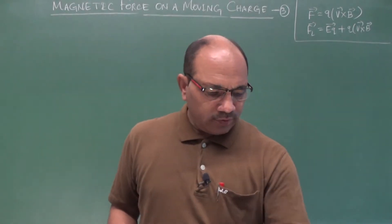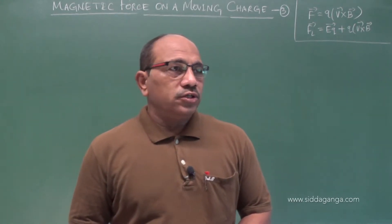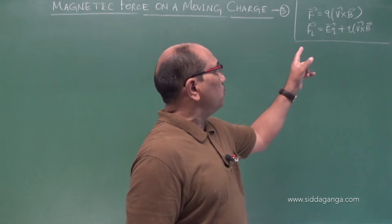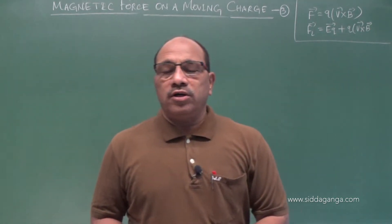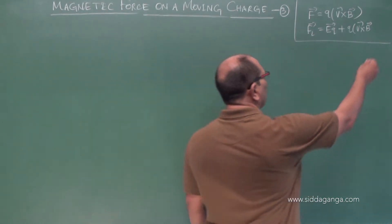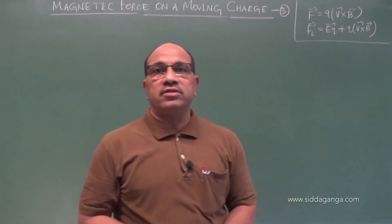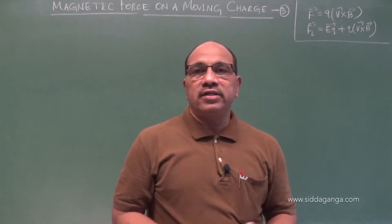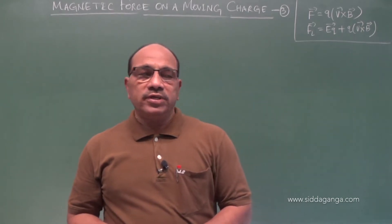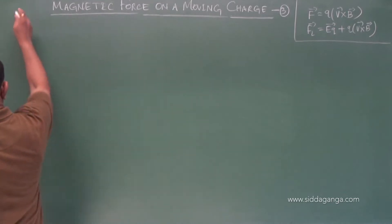Hi students, we are discussing about the magnetic force on a moving charge in a magnetic field. The two important relations are: the force experienced by a charge moving in a magnetic field, F = Q(V × B), and the Lorentz force — the force experienced by a charge moving in a combined electric and magnetic field. When the charge enters perpendicular, it describes a circle with radius mv/Bq, and related period and velocity. This was discussed in the previous session. Now we will see some numericals on this as per JEE and NEET concern.